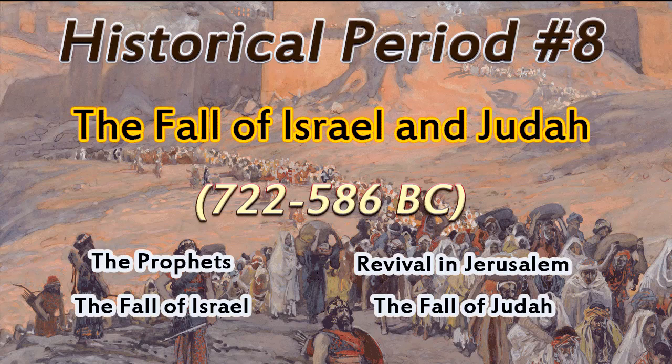Number three, revival in Jerusalem. Revival happened because eight of the kings in the southern kingdom of Judah sought the Lord, and the other twenty were wicked. The kings who served the Lord were Asa, Jehoshaphat, Joash, Amaziah, Uzziah, Jotham, Hezekiah, and Josiah. Number four, the fall of Judah in 586 BC. The fall of Judah happened because they had forsaken the Lord, and disaster was inevitable. King Nebuchadnezzar of Babylon conquered Jerusalem in 586 BC and took them out of the land to the land of Babylon, the land of idolatry.